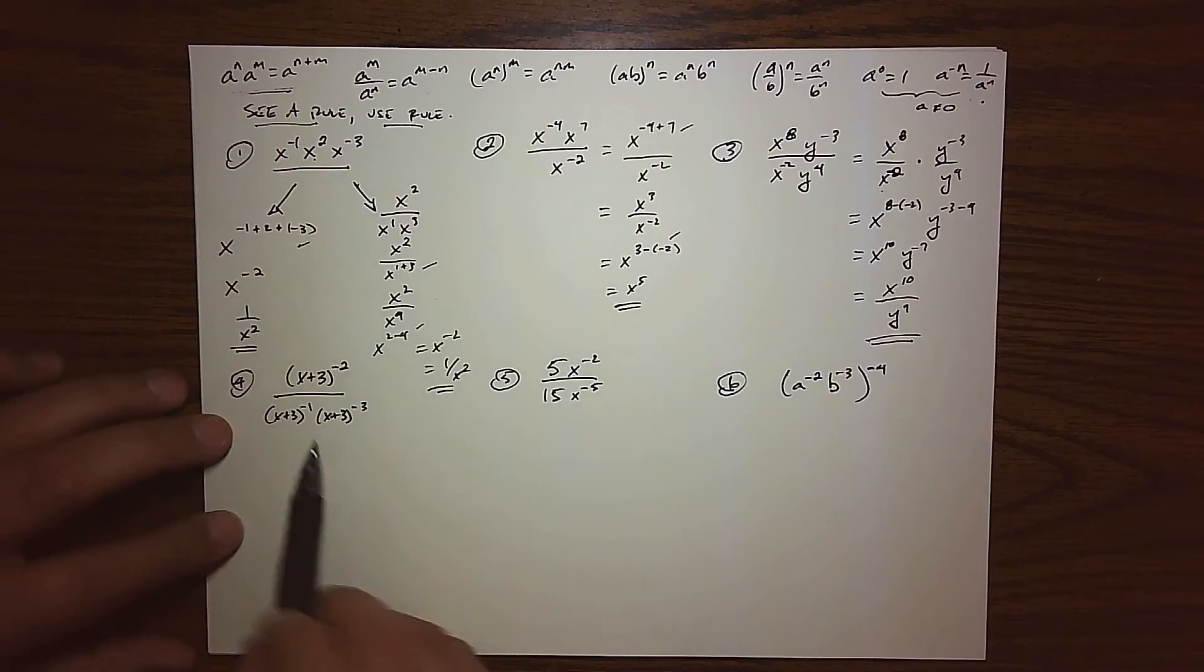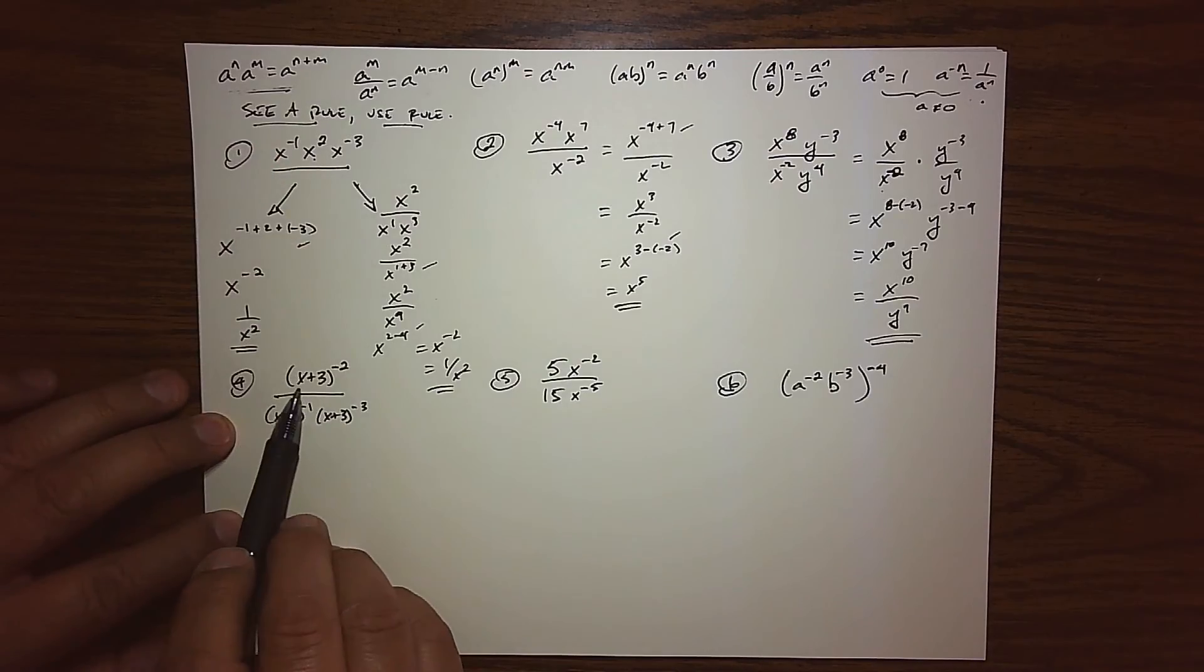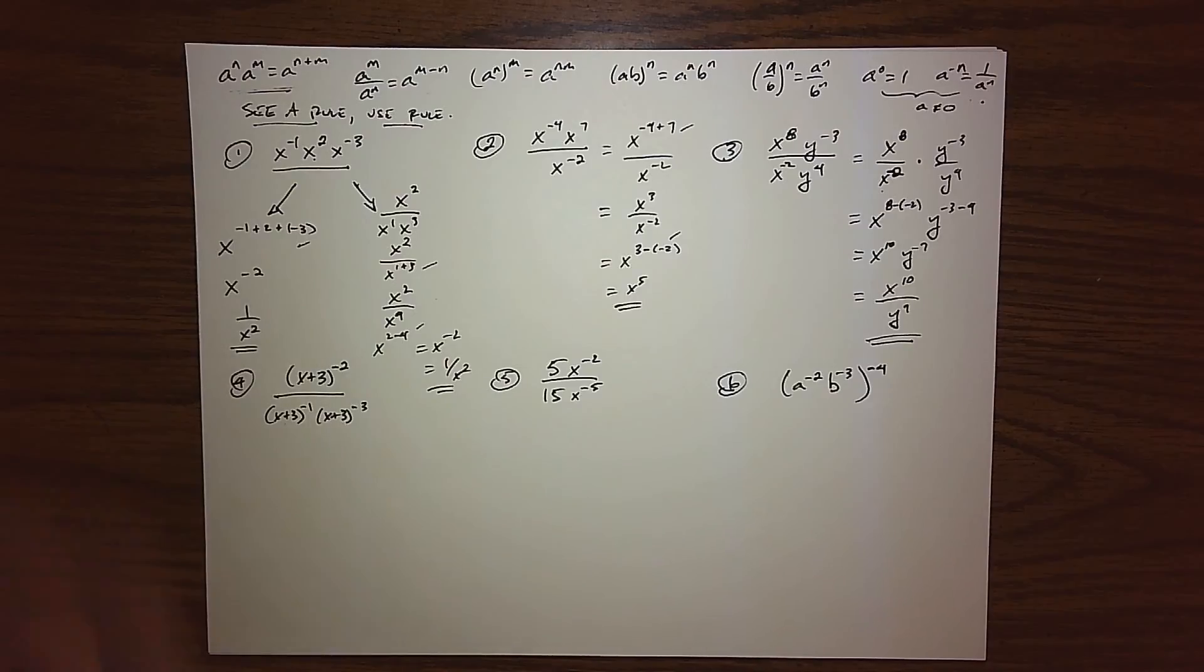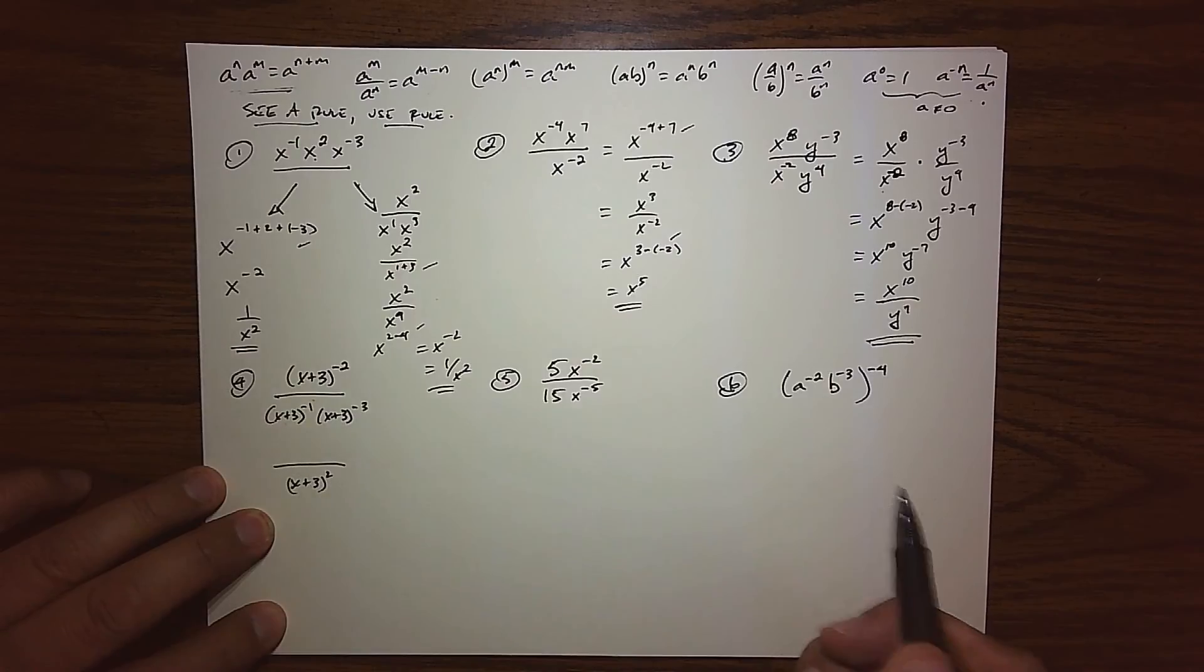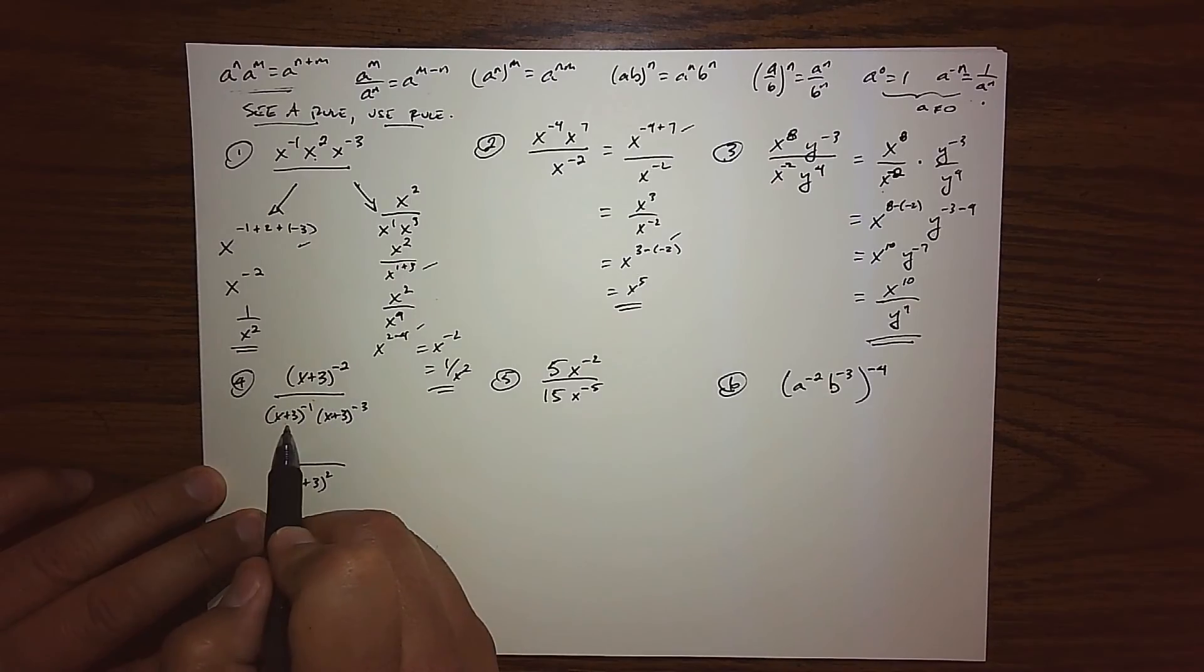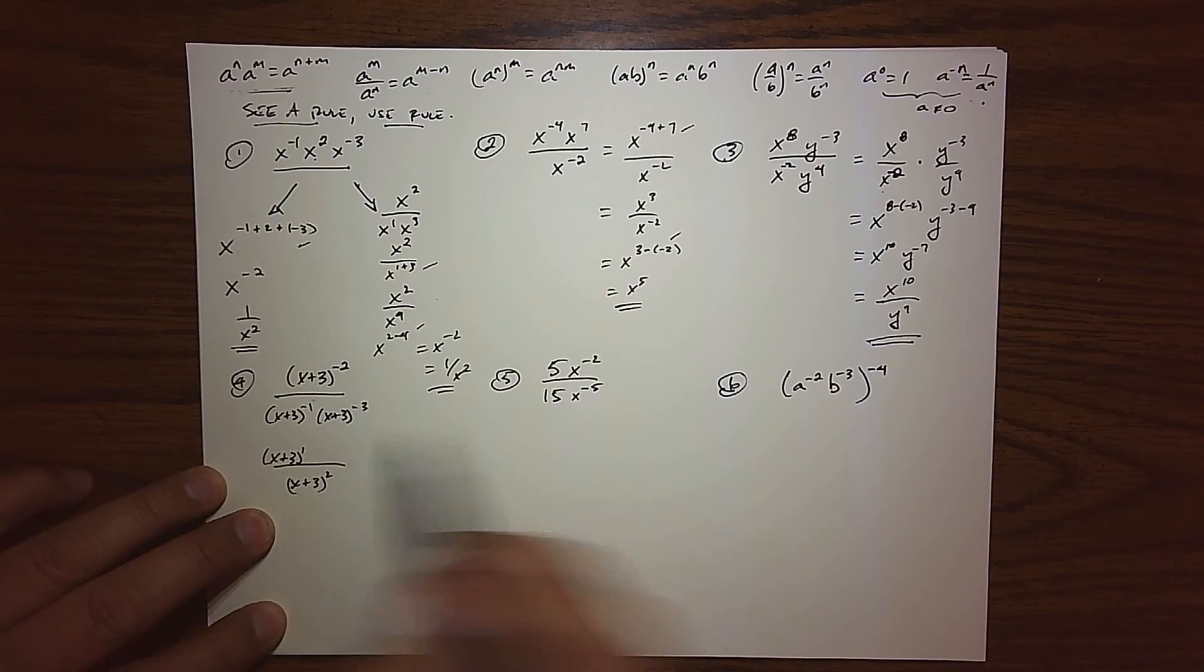So just to change things up, this next problem, we have a kind of a crazy base, but the good news is it's the same base. So just to satisfy those students who like to move some things around first, how about I change things up and do that? So when I do this, I have this is to a negative exponent, so it's going to drop down to the denominator. This is to a negative exponent, so it's going to move up into the numerator. And this is to a negative exponent, so I'll move it up to the numerator.